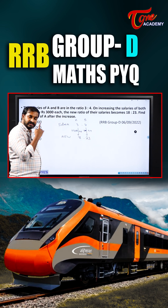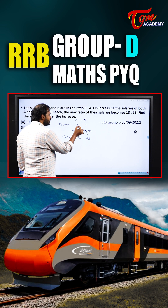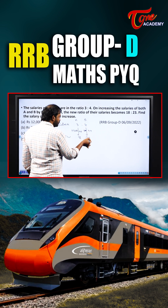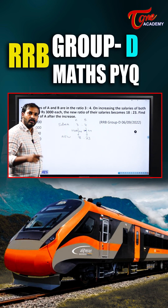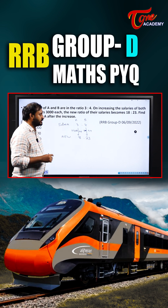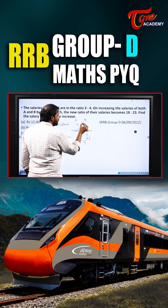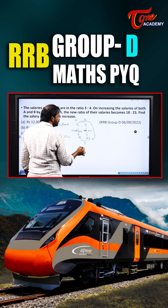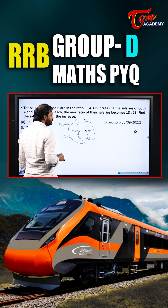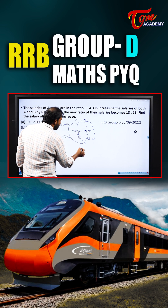But here it is increasing 15 parts and this one is increasing 19 parts. So first I should write the differences between these two. The difference here is 5 and the difference here is 1. So multiply to make the differences equal.